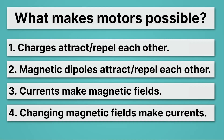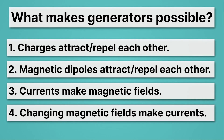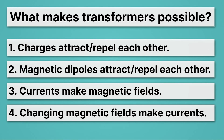Now let's practice. Which of the four principles of electricity and magnetism makes motors possible? Remember, motors generate motion from electricity. If you guessed principle three — currents making magnetic fields — you're right. We take in electricity, put those currents around magnetic fields, which causes the motion of the magnetic fields, and that's what motors do. What about generators? Generators take motion and make electricity, so it's principle four: changing magnetic fields make currents. What makes transformers possible? There are two answers — pause the video and think about it.